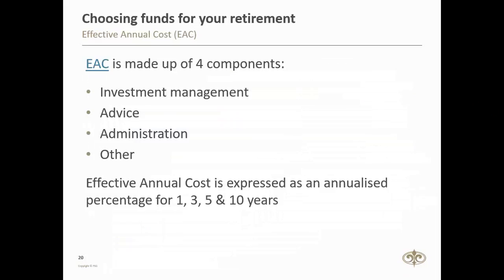EAC is made up of four components. The investment management charge is the total expense ratio and transactional costs of the underlying financial product. The advice fees will only be applicable if you engage with an advisor — so if you are not using an advisor, this fee will be zero, or if you are using an advisor, it will be the fee you negotiate with that advisor. The administration costs relate to the administration of the product, which may include ongoing administration charges, fees for the processing of your instructions, communicating with you, and sending your statements on a frequent basis. The final component, indicated as 'other', may include costs such as a termination cost or some penalties which might relate to the product.